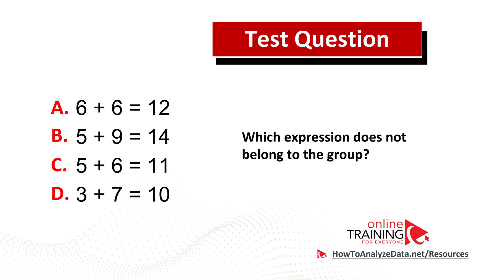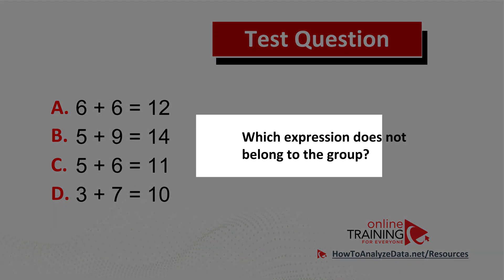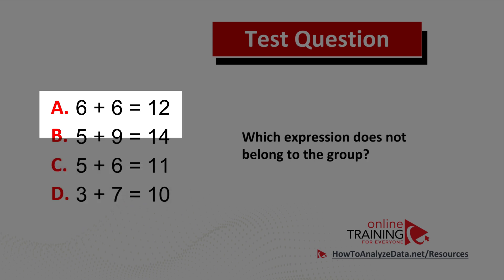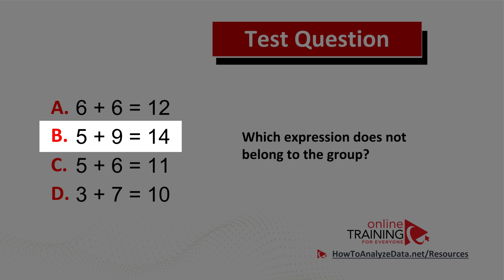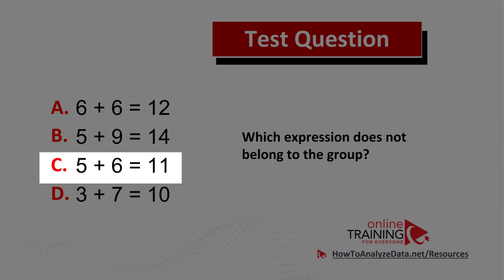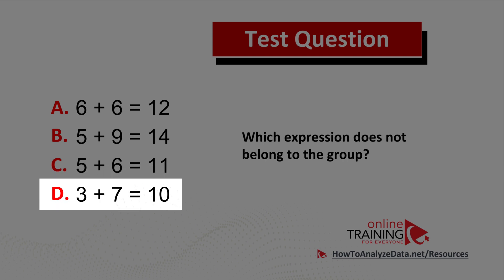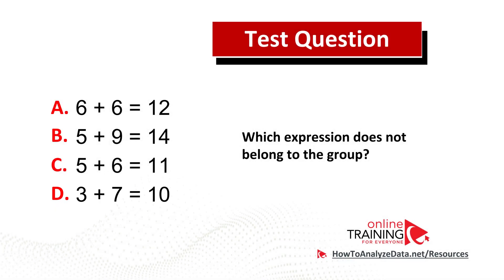Here is a very interesting and tricky question you might frequently see on the test. Which expression does not belong to the group? You have four different choices: Choice A, 6 plus 6 equals 12. Choice B, 5 plus 9 equals 14. Choice C, 5 plus 6 equals 11. And choice D, 3 plus 7 equals 10. Do you think you know the answer? Pause this video and give yourself 10 or 20 seconds to see if you can come up with the solution.